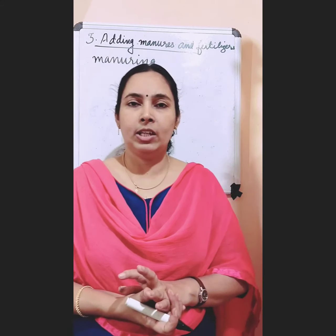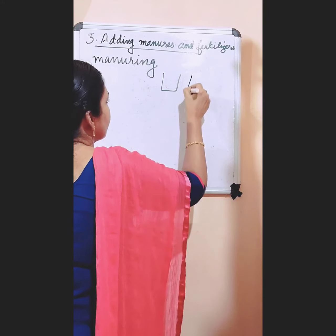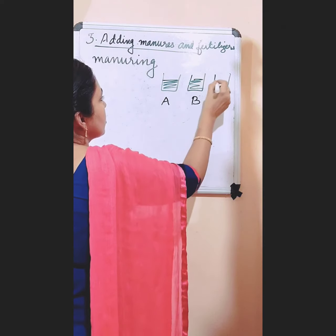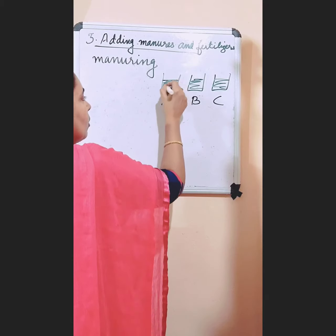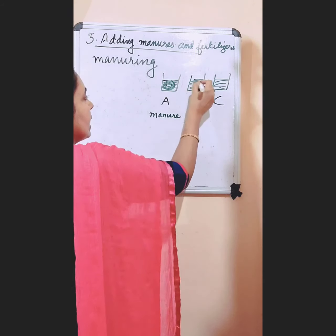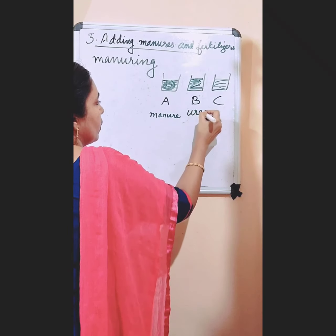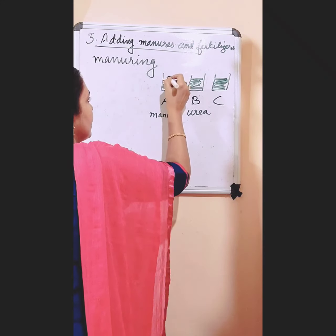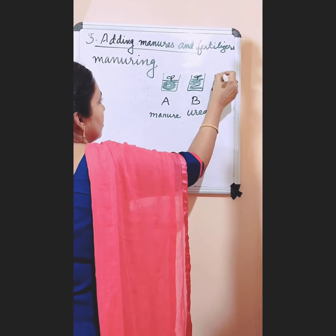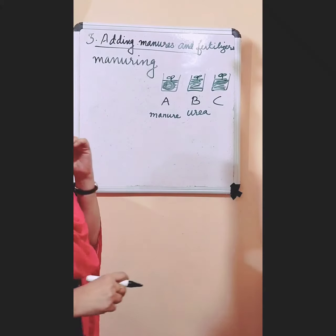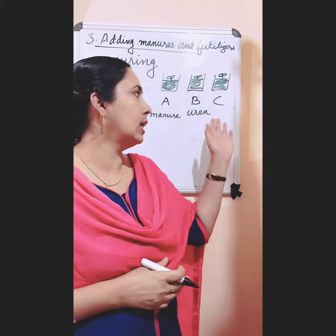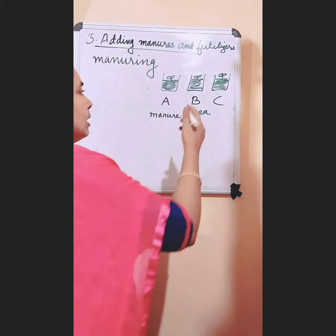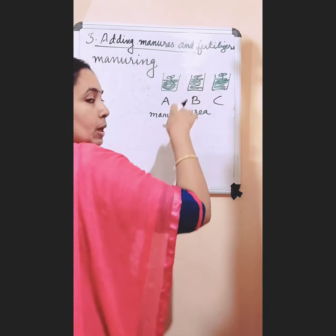There is one activity: take three glasses A, B, and C, and fill them with soil. In the first glass, along with soil, add some manure. In the second glass, along with soil, add some urea. And in the third glass, only soil — don't add anything. Then plant some seedlings in all three glasses. Every day, pour an equal quantity of water in all three glasses. After a few days, you can see the growth of the plants. The plant in glass B shows better growth.